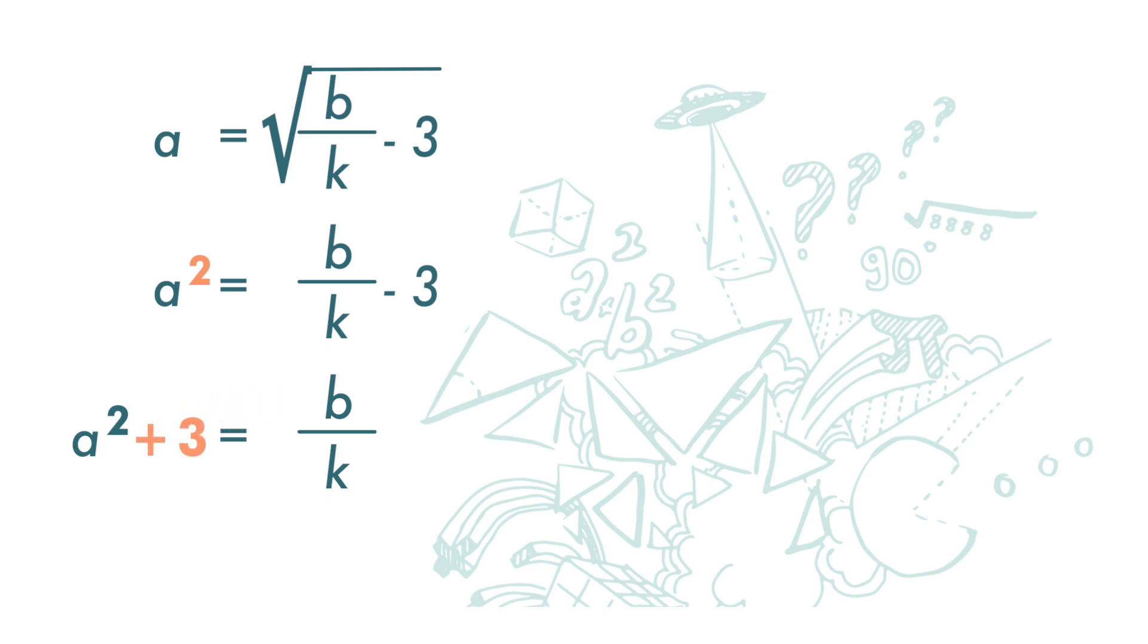Now, we are left with b over k. Note that k is down at the bottom. How do we get around to make k the subject of the formula?